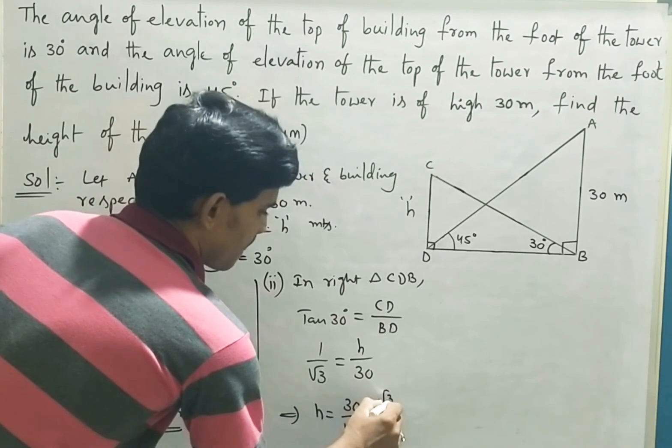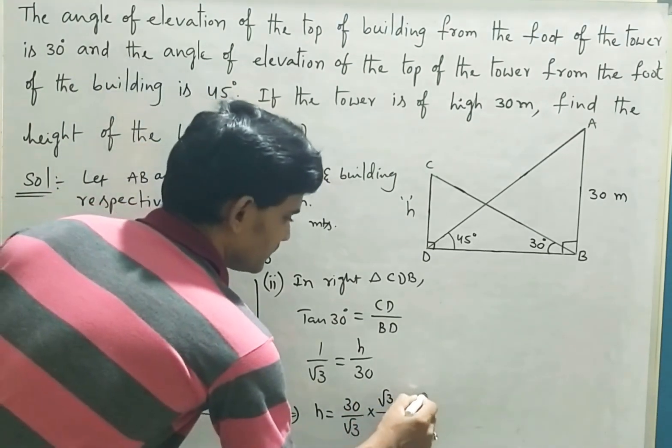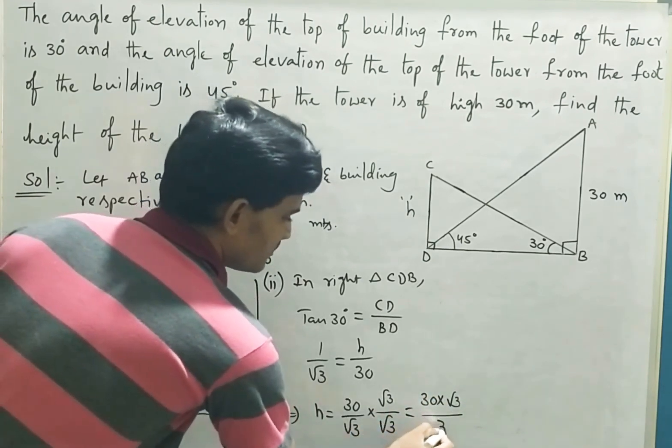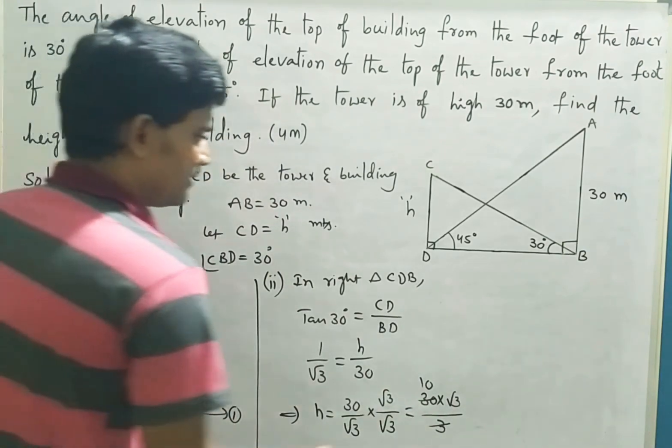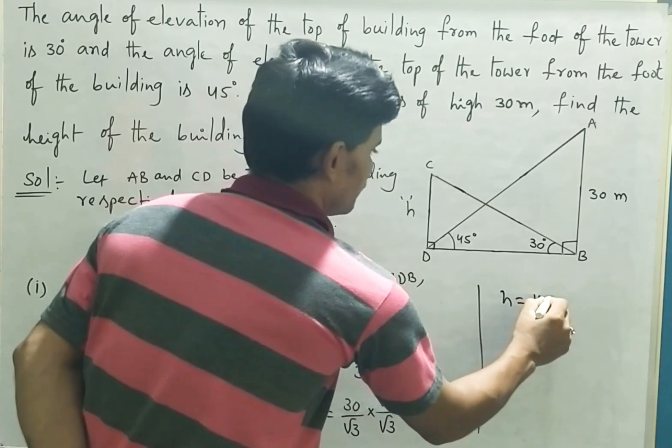If we do rationalization with root 3, that is 30 root 3 by root 3 into root 3, which becomes 3. 30 divided by 3, so h becomes 10 root 3.